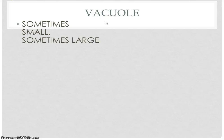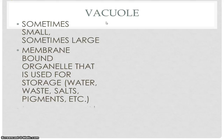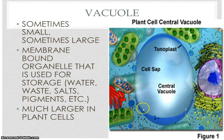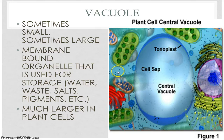Our last two — vacuole. One word: storage. They do exist in both plant and animal cells, but they're really prevalent in plant cells. Plant cells need a lot of water, so this is just a place to store excess water for the plant — sometimes waste, sometimes salts, sometimes pigments. But think: storage.